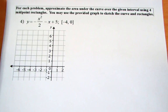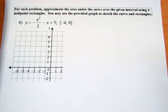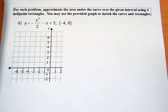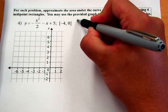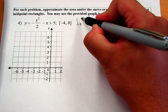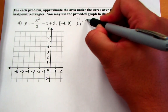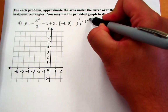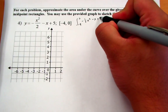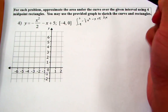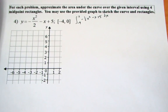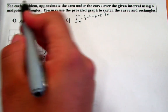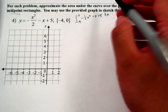We're going to approximate an area using Riemann sums, looking at both the midpoint rectangle and the trapezoid rule approach. One thing that would be valuable to know is how to write this as an integral. The integral formula would look like the integral from negative 4 to 0 of negative one-half x squared minus x plus 5 dx. We're going to approximate that integral using a couple of approaches, starting with the midpoint approach.